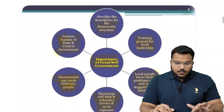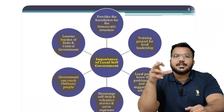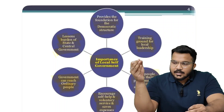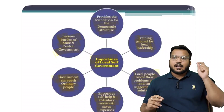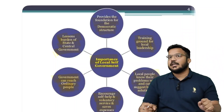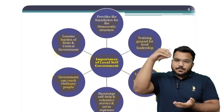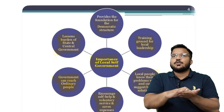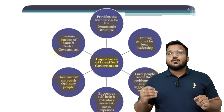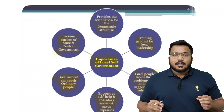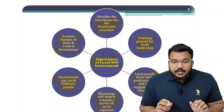Importance of local self-government — सबसे पहले देखा था: to provide the foundation for the democratic structure. Democracy का मतलब है हर एक people का vote, हर एक people की बात सुनी जाए। यह democracy हर एक people of India तक तभी पहुंचेगी जब सबसे last level of democracy — rural area के सबसे छोटे village — में भी लोगों को बोलने की power हो और सुनने के लिए कोई हो।